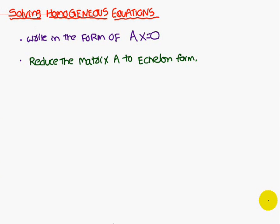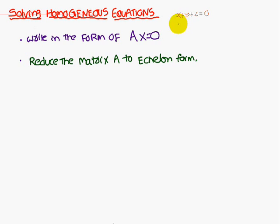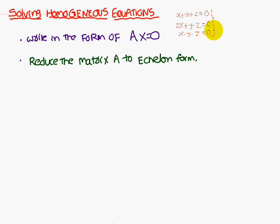Today we are going to discuss solving homogeneous equations. Suppose we are given the equations: x plus y plus z is equal to zero, 2x plus y minus z is equal to zero, and x minus y minus z is equal to zero. These equations are called homogeneous equations.